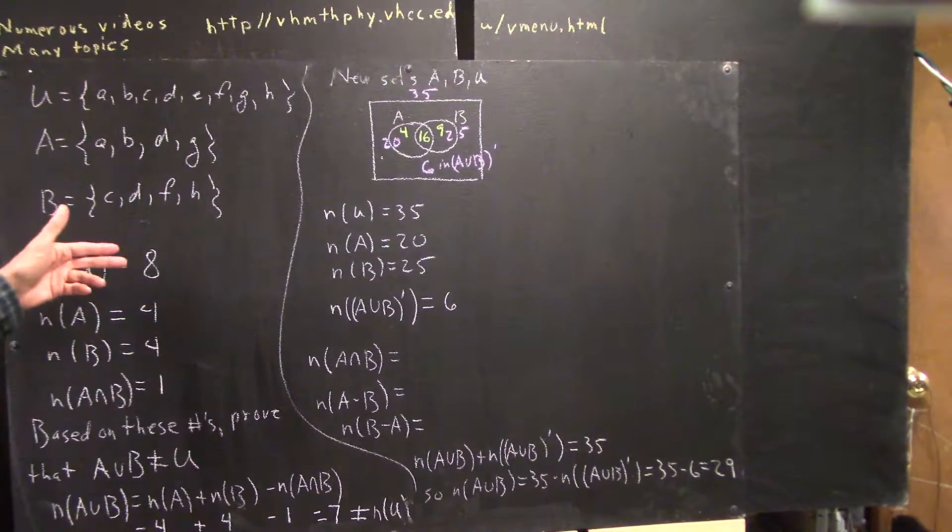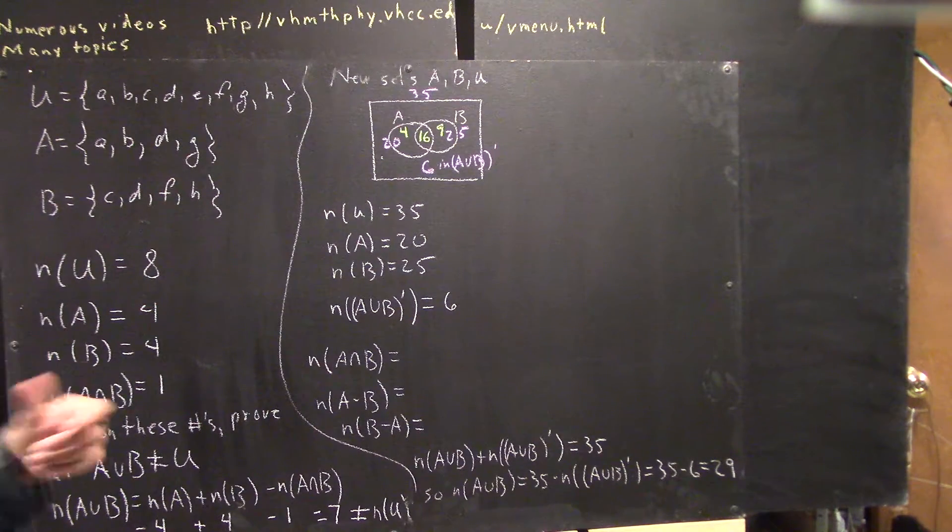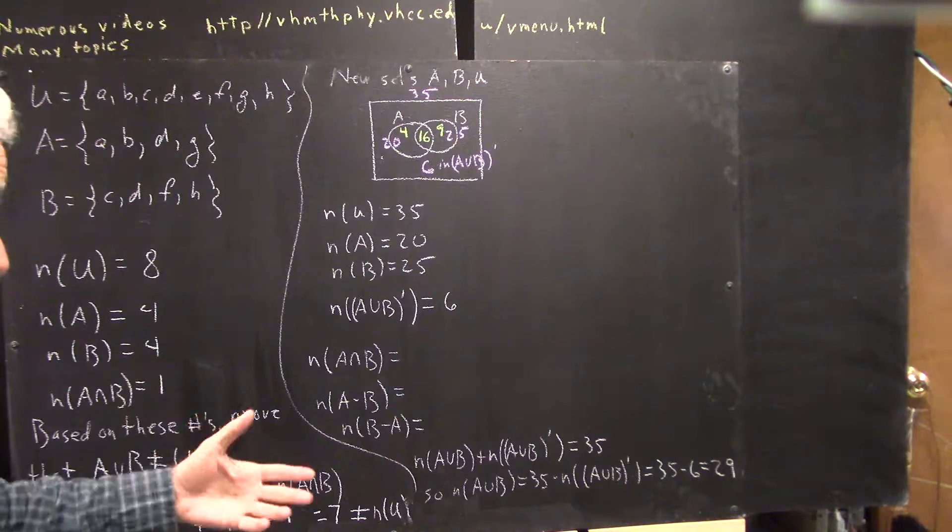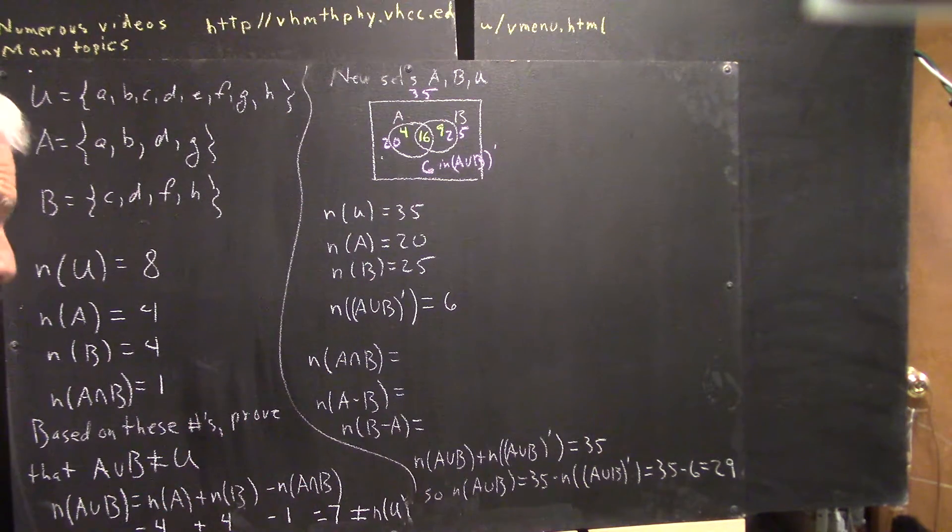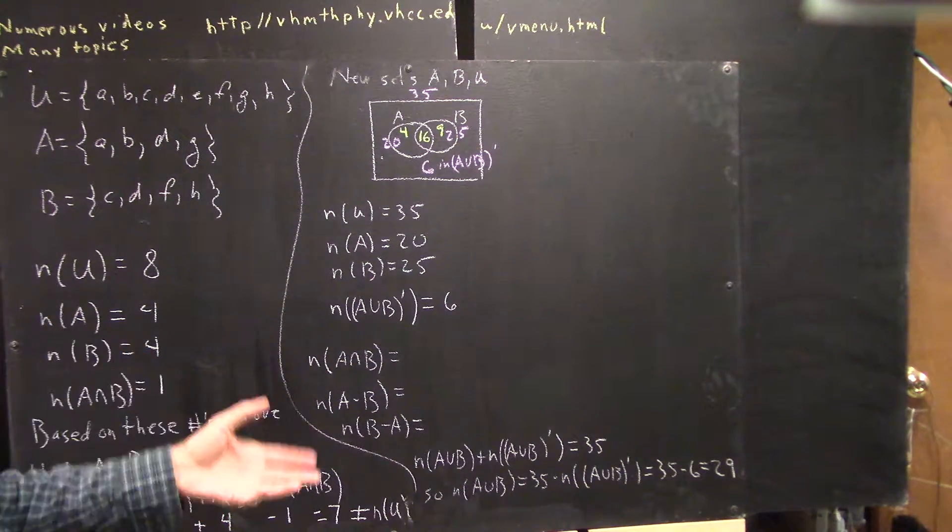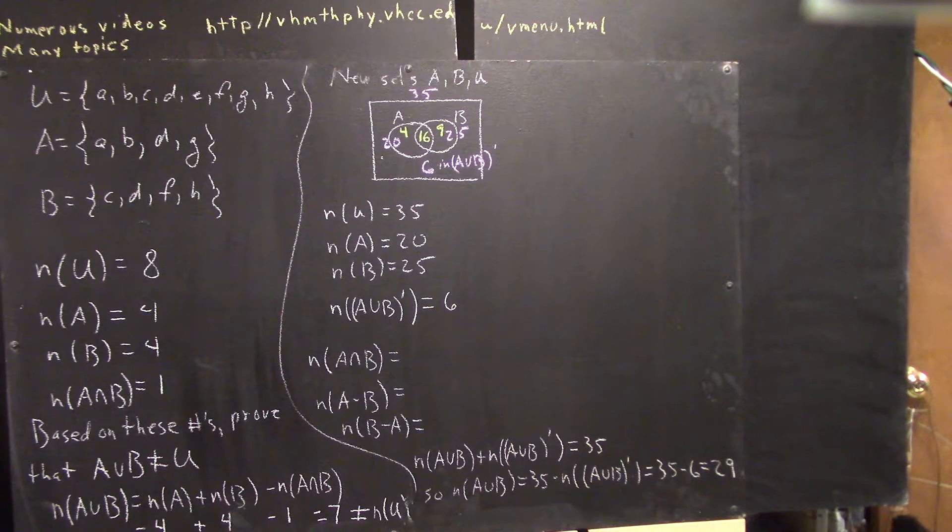The cardinality of the universal set being eight. Well, if two finite sets have different cardinalities, they have different numbers of elements, so there's at least one element in one of them that isn't in the other. And that proves that A union B is not equal to the universal set.